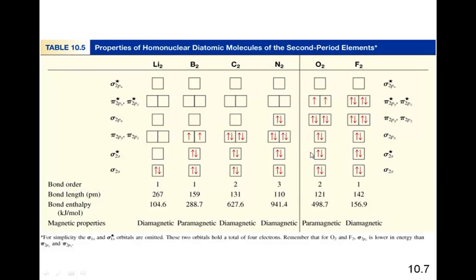We also notice that as we go from bond order 1 to 2 to 3, the bond lengths are getting shorter and the bond enthalpies are getting greater. The greater the bond order, the shorter the bond length, and the more energy it takes to break that bond — that's what bond enthalpy tells us. The shorter the length of the bond, the stronger the bond is.